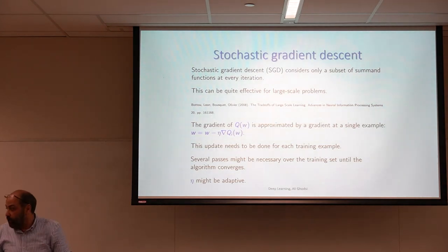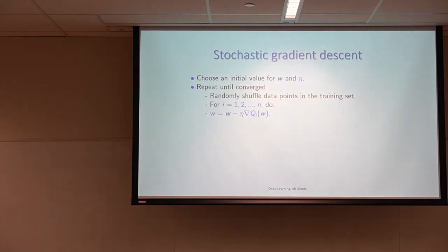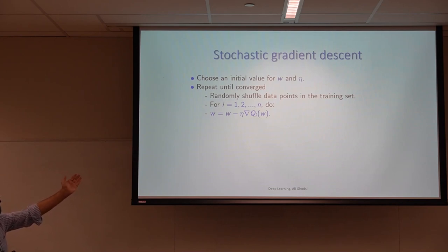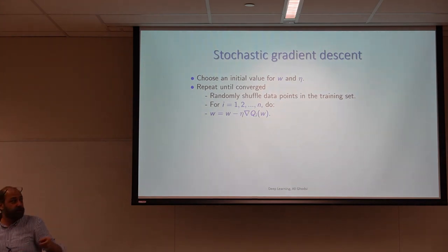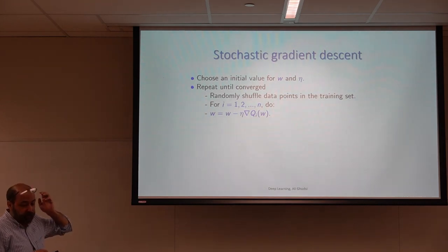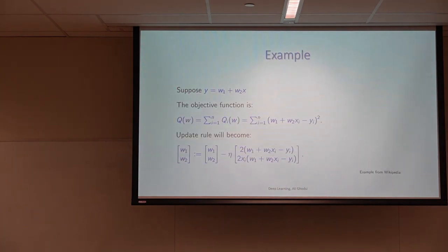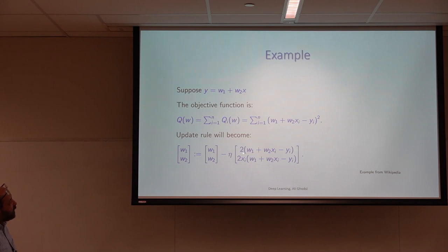The question would be: why does it work? We'll talk about that, but let's first understand how it works. As usual you have some initial value, a learning rate, and then in one epoch for all points you compute the update. The difference with gradient descent is that in gradient descent you used q; now it's qi — the gradient for that single point.